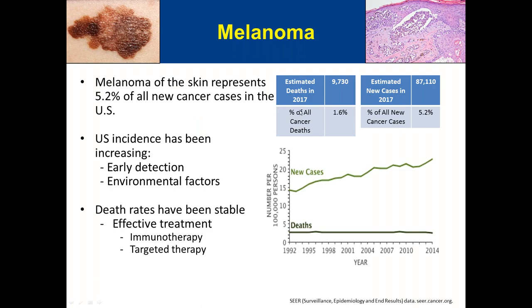In the US in 2017, melanoma of the skin represents approximately 5.2% of all new cancer cases and 1.6% of estimated deaths. You can see from this graph that the incidence of melanoma has been increasing in the US. Fortunately, the death rate has been stable, most likely because we are detecting melanoma cases in their early stages.